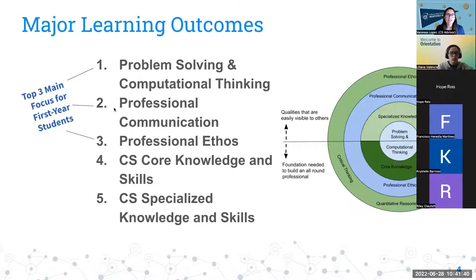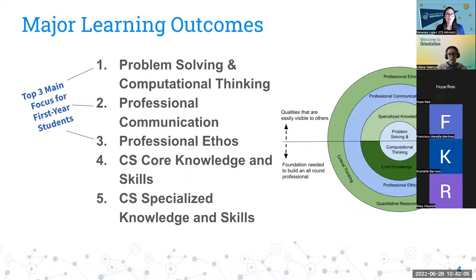The second major learning outcome is professional communication. Throughout your classes at CSUMB, you'll be involved in group projects and presentations in front of your peers and professional employers from industry. These are great opportunities to develop your communication skills, which is super important when applying for internships and practicing for interviews — explaining why you're using certain code to solve problems, including whiteboard problem solving.